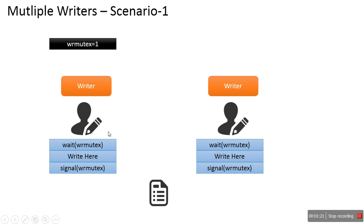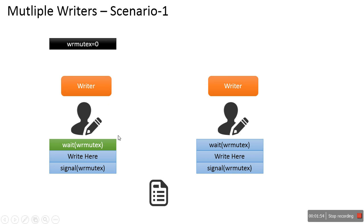Let's say Writer1 starts writing first. It will execute its first instruction: wait(wr_mutex). This function decreases the value of the semaphore and checks whether this value is less than 0. If less than 0, it waits; otherwise it continues. The initial value is 1, so after calling this function the value becomes 0, which is not less than 0, so Writer1 continues and starts writing to the file.